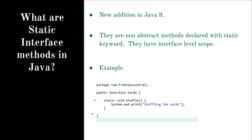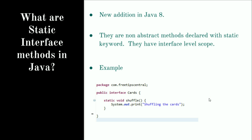As an example, here is an interface called Cards and we have declared a static void shuffle method which prints 'shuffle the cards'. This is a static method within the interface, which is why it is called a static interface method.